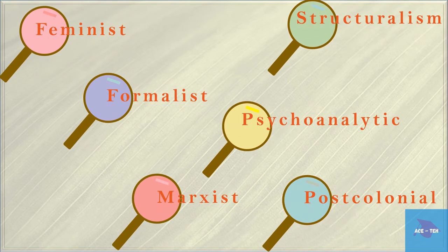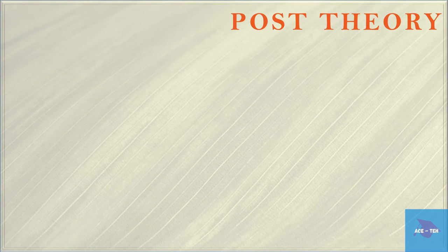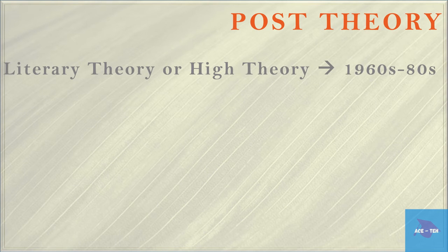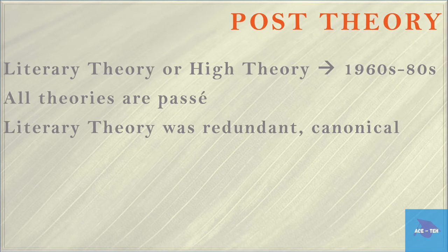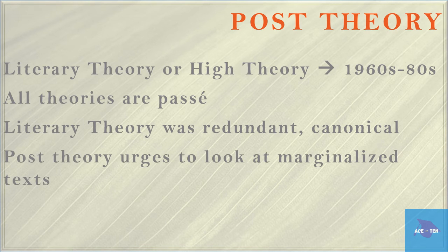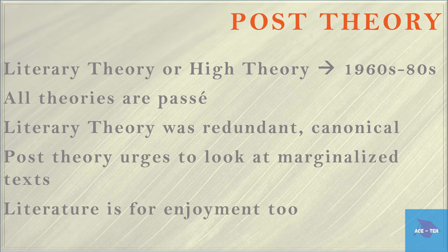Now before we move on to explain what criticism is, let us also see what is post-theory. Literary theory or high theory was prevalent during the 1960s to 80s in the US. The post-Deridian period has opened to a new idea called post-theory which believes that all theories are passé. People felt that literary theory was redundant, canonical and took the pleasure away from reading literature. Post-theory urges us to look at marginalized texts and stresses on the idea that literature is for enjoyment too.